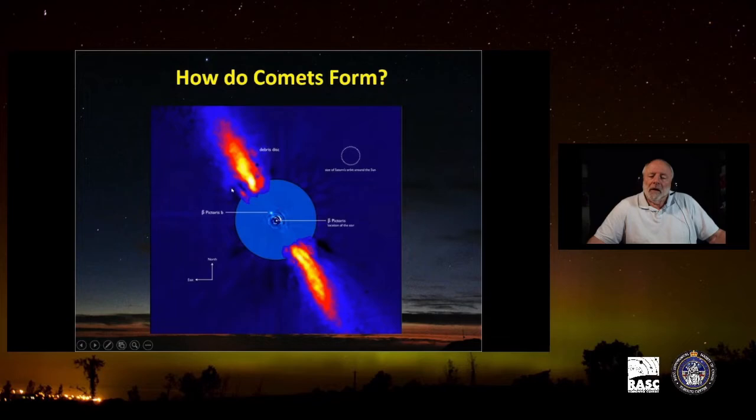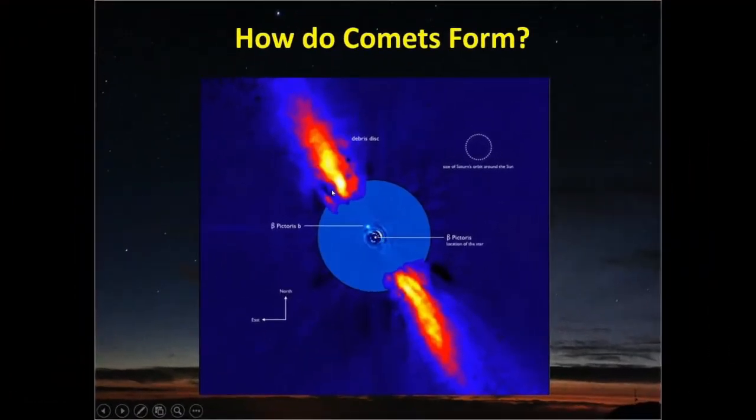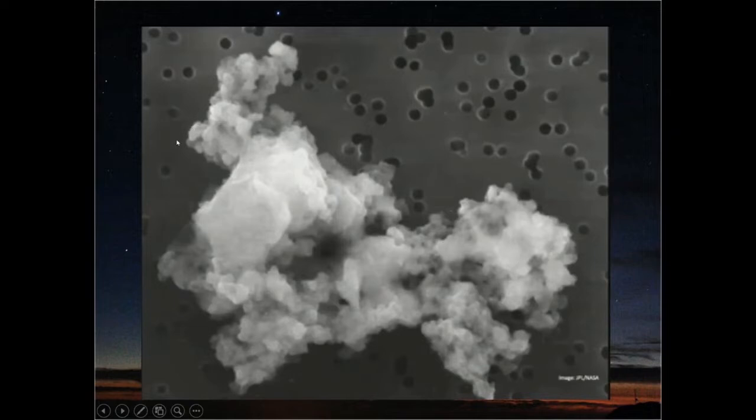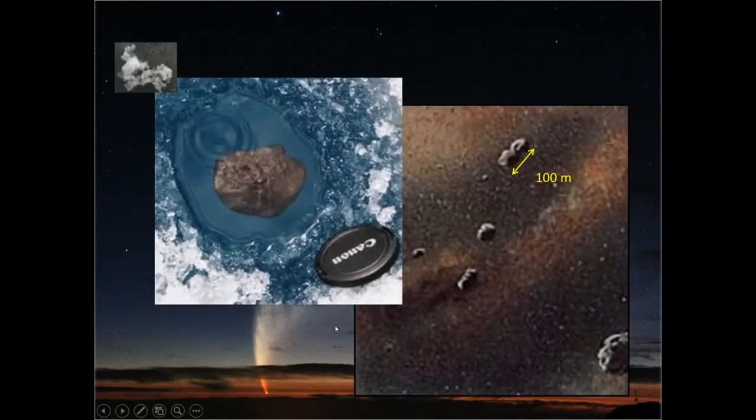How do comets form? This is Beta Pictoris, and we just happen to be lined up right with the plane of that solar system. This is all sorts of dust and gas that's there forming into planets and comets. In the cold outer reaches of the solar system, dust gathers and it sort of forms into irregular chunks of matter with lots of holes in it. Somehow that ends up combining more, and this is a meteorite from Tagish Lake. Somehow that combines into larger things, and it's only when you get to that size that gravity takes a significant role.